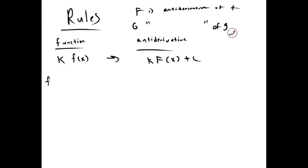If we have k, some constant times lowercase f, the antiderivative is k times capital F plus c. If we have two functions being added together, their antiderivatives are just their individual antiderivatives added together. If we have polynomial x to the n with n not equal to negative 1, then its antiderivative is 1 over n plus 1 times x to the n plus 1 plus c.